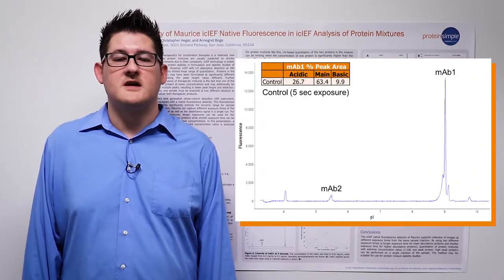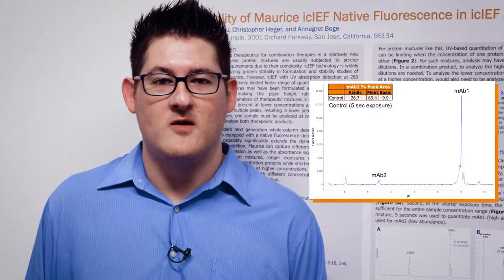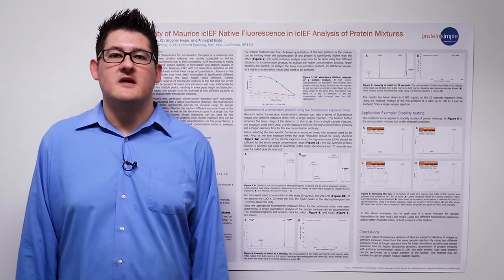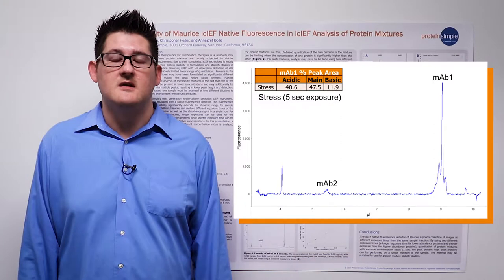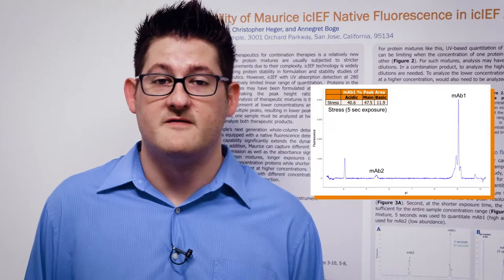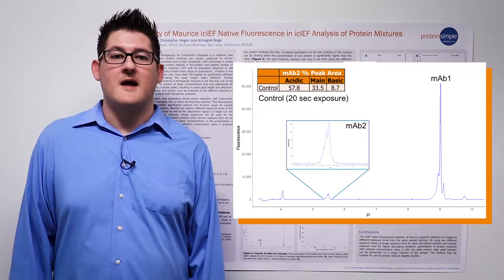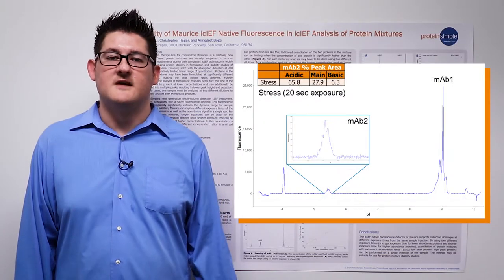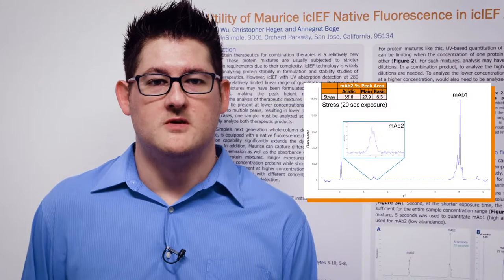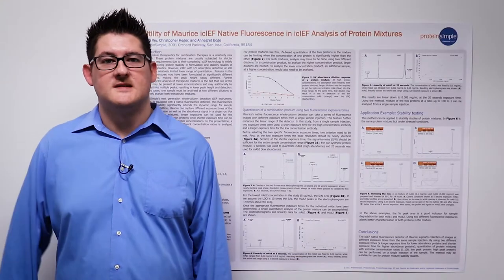In Figure 6a, we first look at the 5-second exposure for the control sample. As you can see, the antibody 1 and 2 profiles in the control sample are as expected. When the sample was stressed for 24 hours, as shown in Figure 6b, an increase in the acidic species from antibody 1 can be seen, using the 5-second exposure. Using a 20-second exposure, we can look at MAB2 in Figure 6c before stress and in Figure 6d after stress. After stress, the profile for MAB2 changes as well. Together, these data show that Maurice can be used for protein stability study testing.